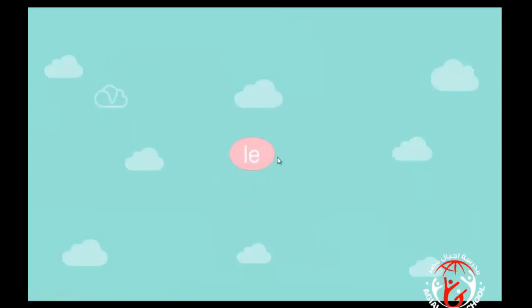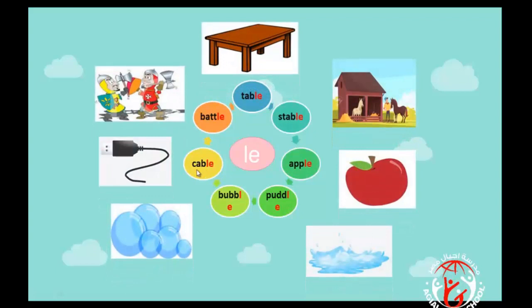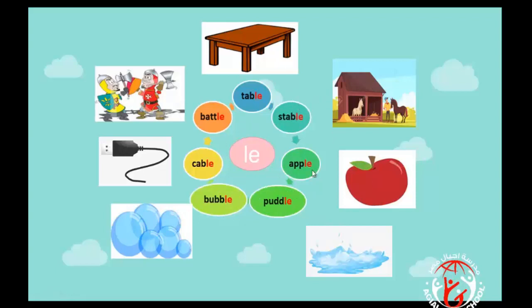Now let's move to Lesson 3 — spelling. We add '-le' to the end of some words. The first word is 'cable.' Then 'battle,' 'table,' and 'stable' — a stable is a place where horses live. Then 'people,' 'puddle,' and 'bubble.'